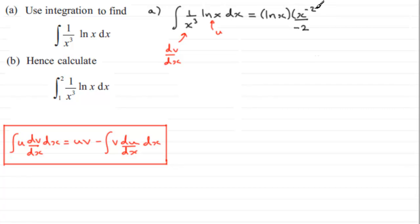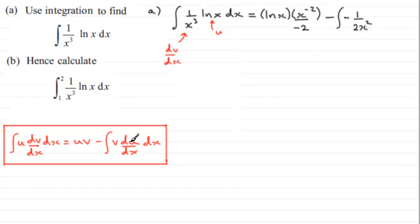So writing out the formula: we have uv — that's the natural log of x multiplied by x to the minus 2 over minus 2 — minus the integral of v times du/dx. Here v is x to the minus 2 over minus 2, which simplifies to minus 1 over 2x squared, and du/dx is the derivative of the natural log of x, which is 1 over x. All of this is integrated with respect to x.